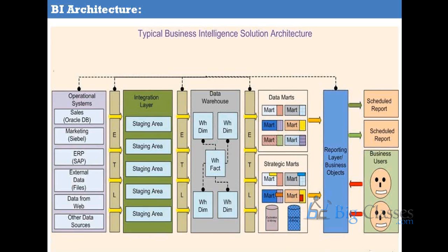When asked who decides between top-down and bottom-up — it is not the ETL team. When a BI project is initiated, the first technical team involved includes the Business Intelligence architect. The BI architect defines the complete framework for the entire BI solution development. That person, in consultation with the client and depending on budget, requirements, and time frame, decides what kind of BI implementation framework should be used — whether top-down or bottom-up.